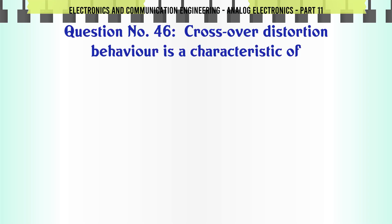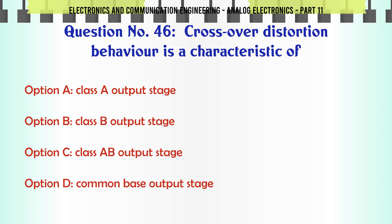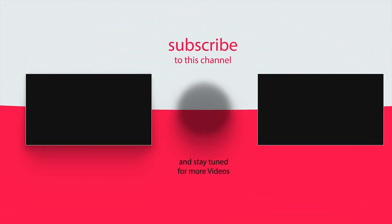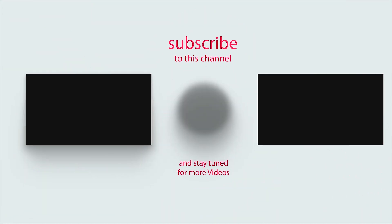Crossover distortion behavior is a characteristic of. A. Class A output stage. B. Class B output stage. C. Class AB output stage. D. Common base output stage. The correct answer is: Class B output stage.